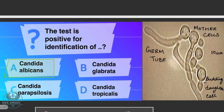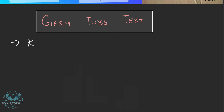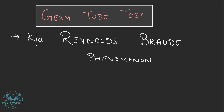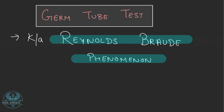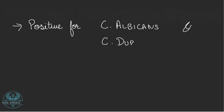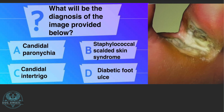The given image shows a positive germ tube test, also known as the Reynolds-Braude phenomenon. The germ tube test is a laboratory diagnostic test used to identify Candida albicans. It is based on the ability of Candida albicans to produce germ tubes — elongated outgrowths from the yeast cell — when mixed with human serum and incubated for 2 hours. Another species of Candida that shows a positive germ tube test is Candida dubliniensis.